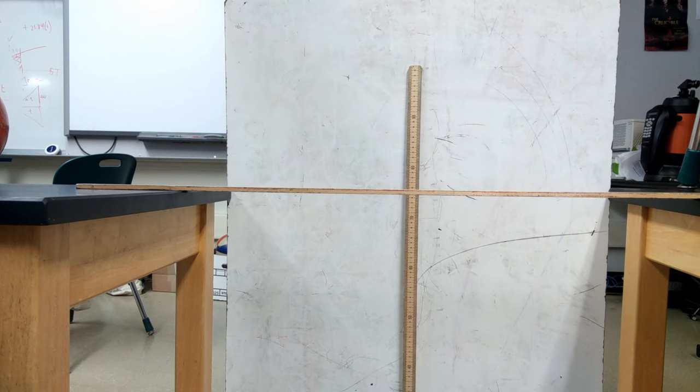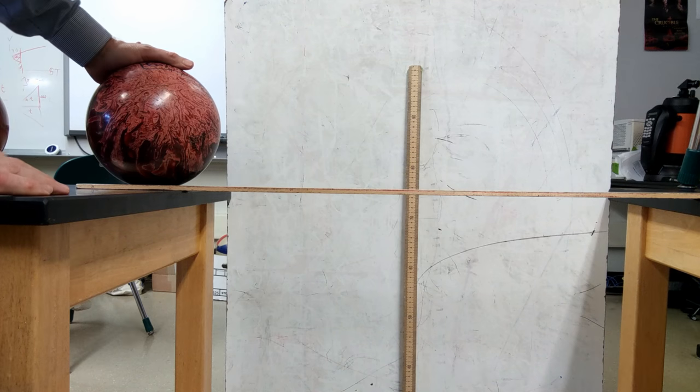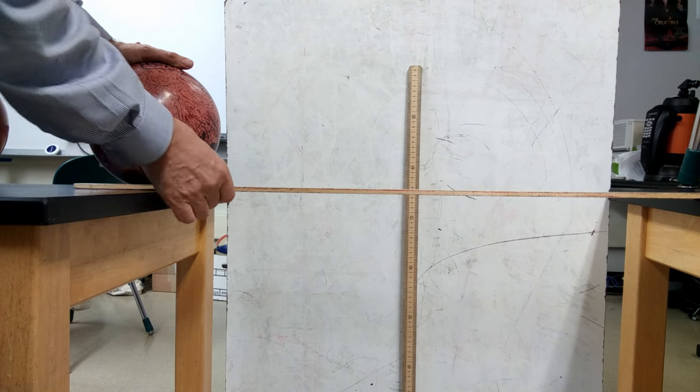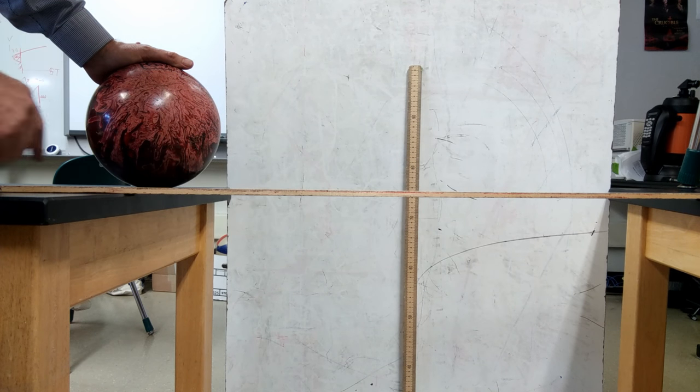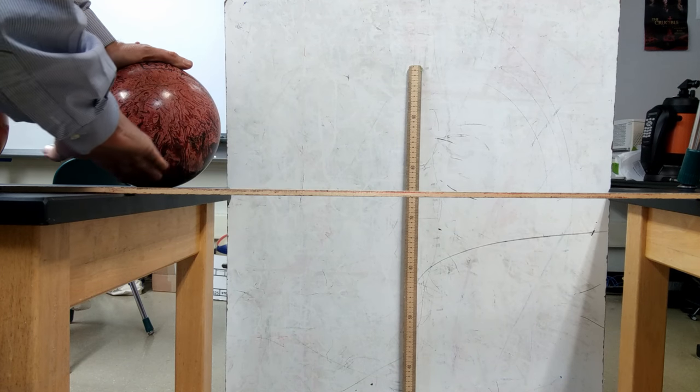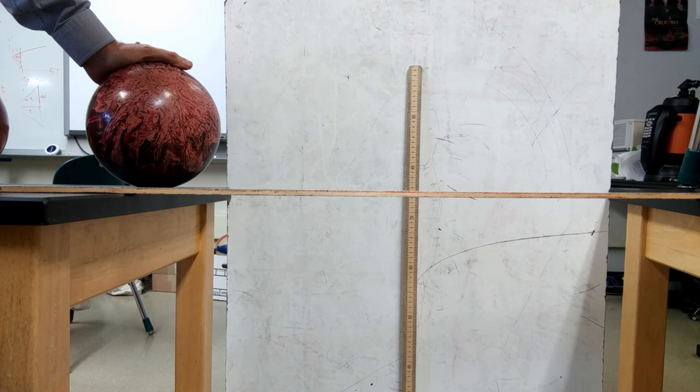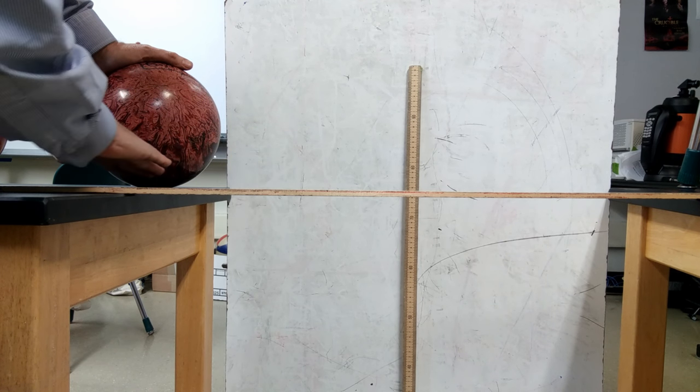So what's going on with our table? Put the bowling ball on the table. Right near the bowling ball, getting a little bit of a divot there. That area right there is bending ever